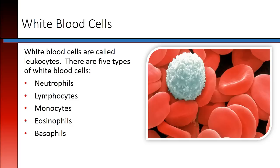The five types of white blood cells are: neutrophils, lymphocytes, monocytes, eosinophils, and basophils.